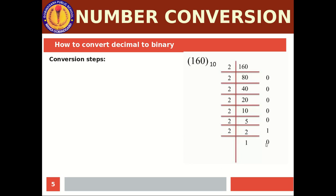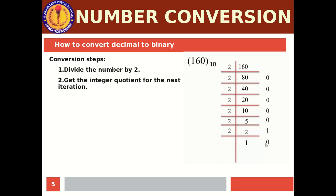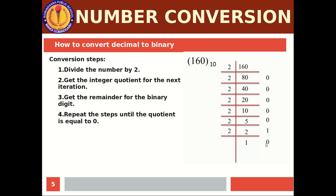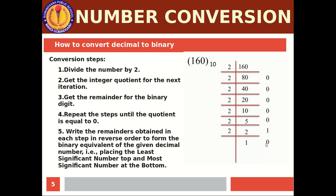Suppose we have 160 as a decimal number and we need to convert it into binary form. The steps are: first, divide the number by 2 and get the integer quotient for the next iteration; get the remainder for the binary digits; repeat the steps until the quotient equals 0; then write the remainders obtained in each step in reverse order — placing the least significant bit at top and most significant bit at the bottom.